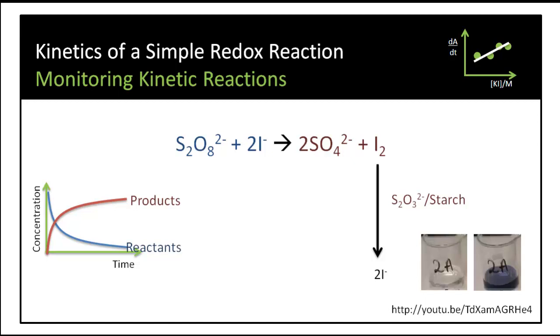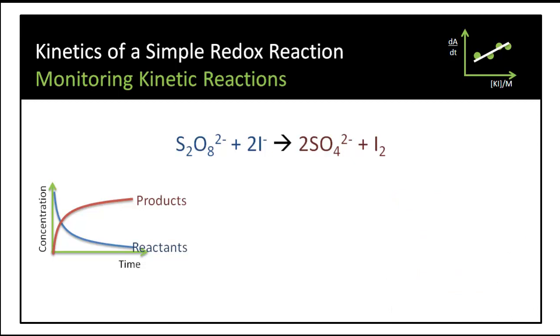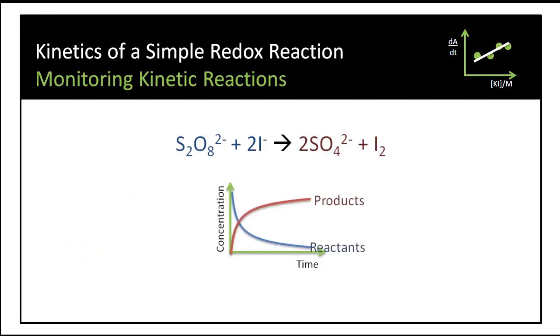However, in this reaction we want to go back to the original idea of looking at the formation of products. Iodine is formed in this reaction. And while it's difficult to measure the concentration of iodine as it forms, iodine will react with iodide ions in equilibrium to form the triiodide ion. Therefore we can use the formation of the triiodide ion as a way of measuring the rate of this reaction.